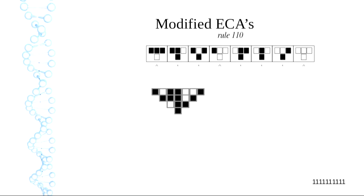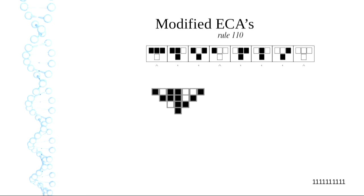That one bit is my indicator bit — it tells me whether the string is viable or not. I get a bit string of odd length, apply my rule to it, and keep applying it until I get one bit. If that bit is a one, it's viable; if it's zero, it's not. I can apply an arbitrary rule to an arbitrary odd-length bit string and I can mutate it. I've taken the right-hand bit and flipped it to a zero and see if it affects it — it doesn't propagate down, so that's a neutral mutation.